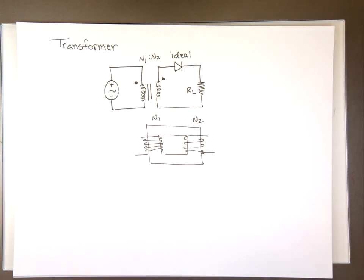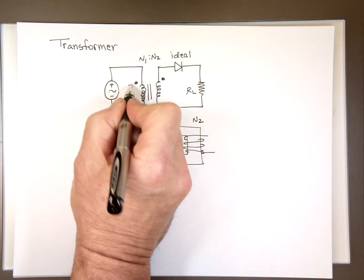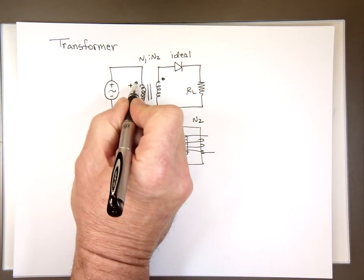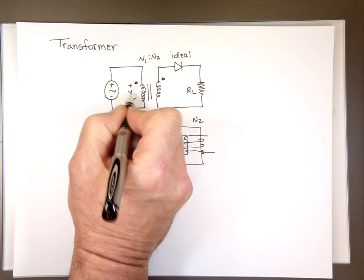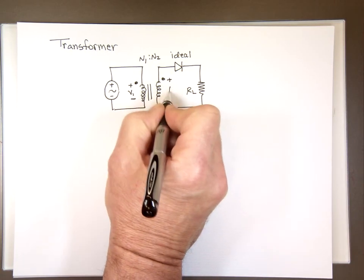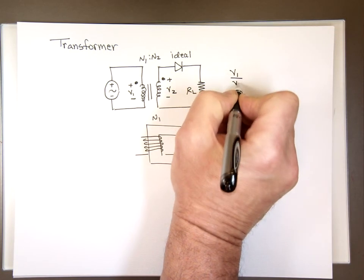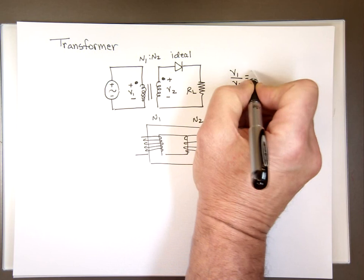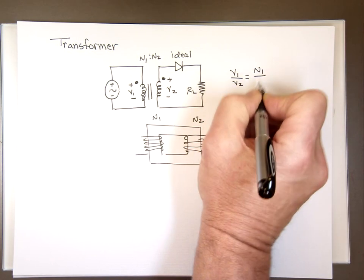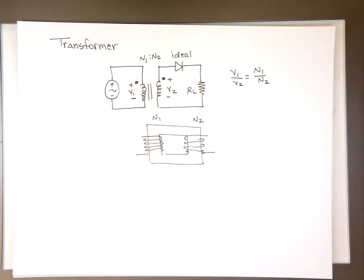So we found out there is a relationship between the voltage here. Notice how I define the dot here as positive and the dot here as positive. The ratio of V1 to V2 is the same as the ratio of N1 to N2.